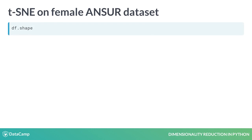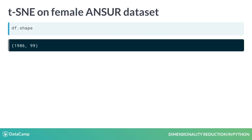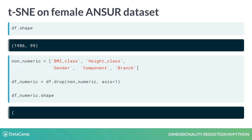Our female body measurements dataset has 99 dimensions. Before we apply TSNE, we're going to remove all non-numeric columns from the dataset by passing a list with the unwanted column names to the Pandas DataFrame drop method. TSNE doesn't work with non-numeric data as such. We could use a little trick like one-hot encoding to get around this, but we're using a different approach here.